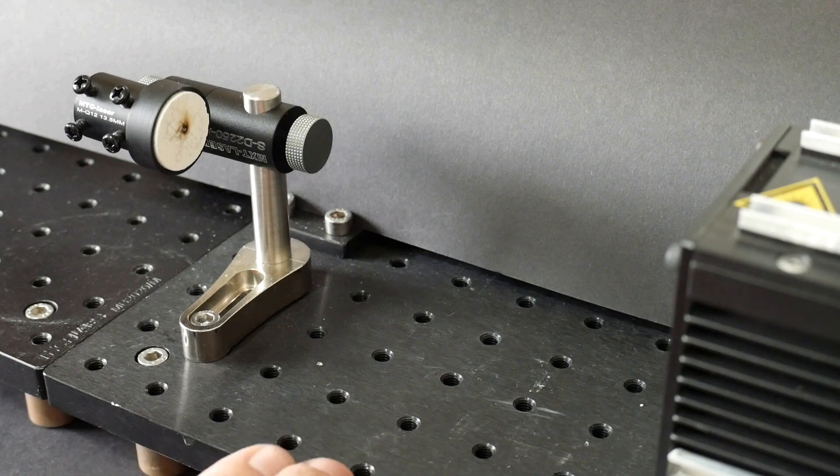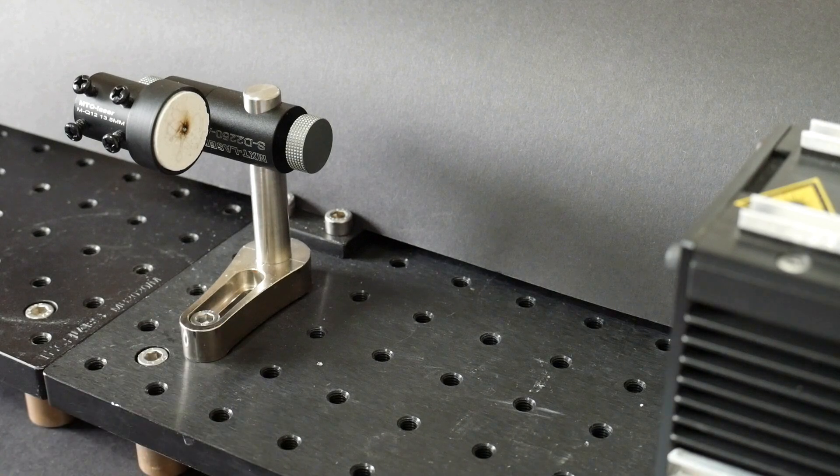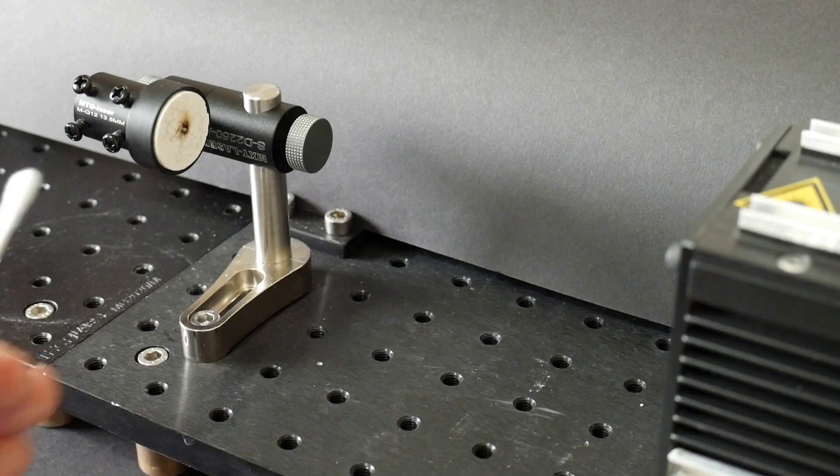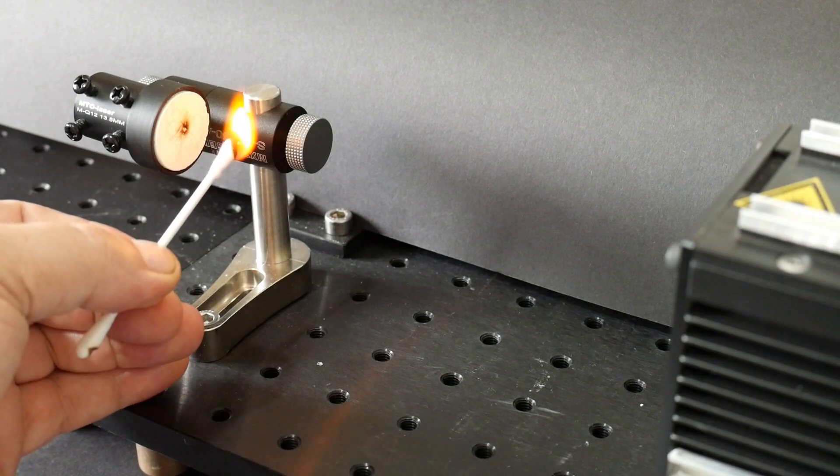The laser is switched on now and although nothing appears to be happening, an invisible laser beam of several watts is now shining at the target. If I hold anything in the beam path that is remotely combustible it will char and burst into flame. Awesome!